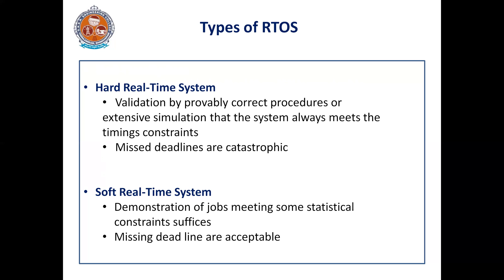In hard real-time systems, if the deadlines are missed, it leads to catastrophic failures. Urgent operations or tasks must be compulsorily completed within the deadlines; otherwise, it leads to catastrophic failures. In the case of soft real-time systems, the demonstration of jobs meeting some statistical constraints of success applies — if you miss the deadlines, they are acceptable, only your response time will be increased. But in the case of hard real-time systems, missing deadlines is not acceptable.